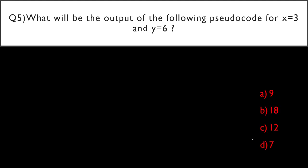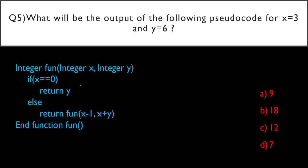Question five: What will be the output of the following pseudocode for X = 3 and Y = 6? Options: A) 9, B) 18, C) 12, D) 7. The pseudocode: integer fun(integer x, integer y) — if x == 0 return y, else return fun(x - 1, x + y). Pause and try to solve it before continuing.